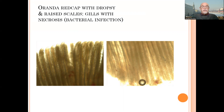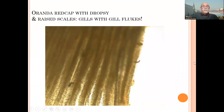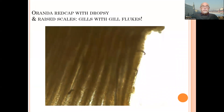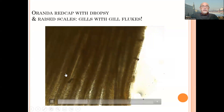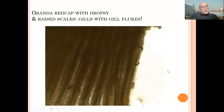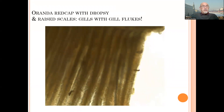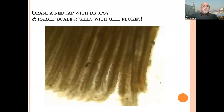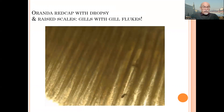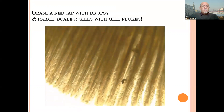The gills are affected — you can see the lesions, the bleeding, bacterial infections, and necrotic tissue. The gill lamellae are damaged by bacteria, and at the same time we found gill flukes moving at the side. They cause lesions and damage, and those damaged areas are risky because bacteria can penetrate through the wounds in the gills and cause bacterial infections.